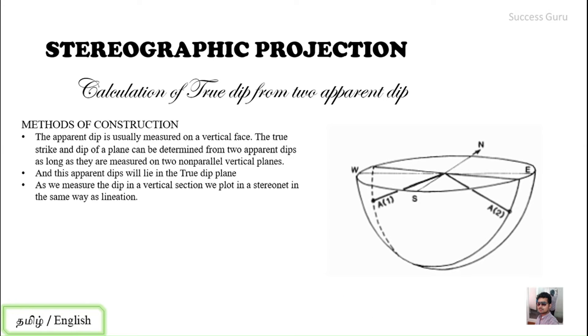As I mentioned, the dip in a vertical section, we plot it in a stereo in the same way as a lineation. As I mentioned earlier, we are dealing with a section where you will be having only a line-like structure, so you will consider it as a lineation and we will plot it in the same way as a lineation.